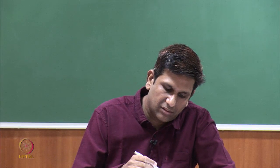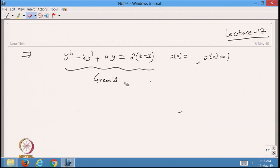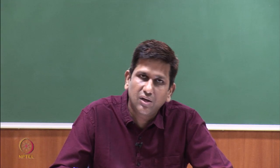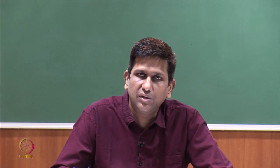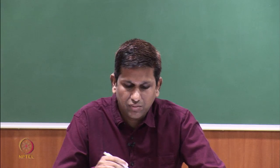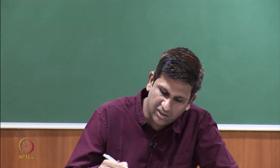Finding the Green's function is a very tedious process, because for a second order equation you have to find four coefficients and then apply properties of the Green's function like the continuity jump condition. But you will see that if I want to solve this one with the help of Laplace transformation, it is quite easier compared to the previous method. This is my Green's function.